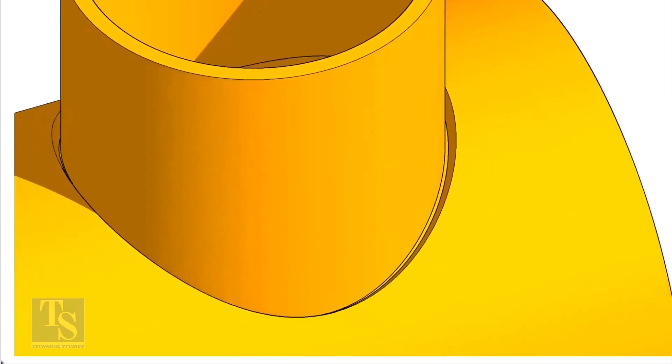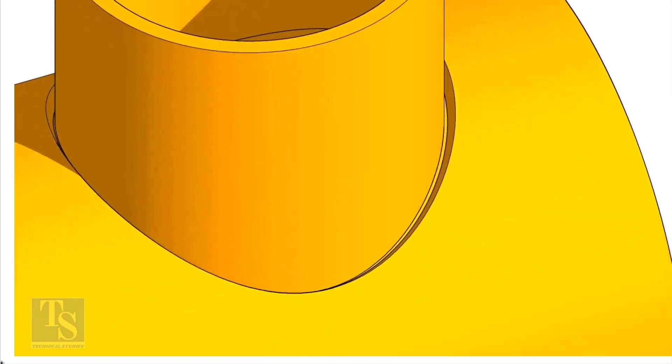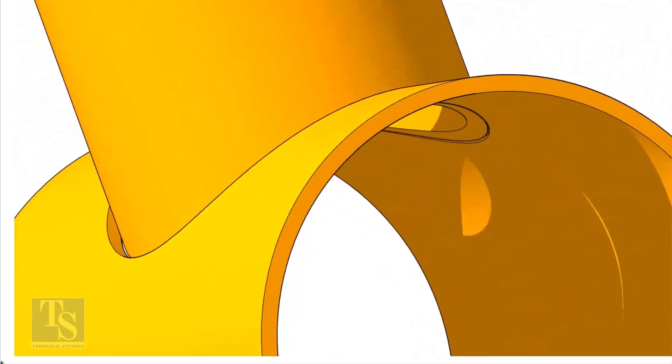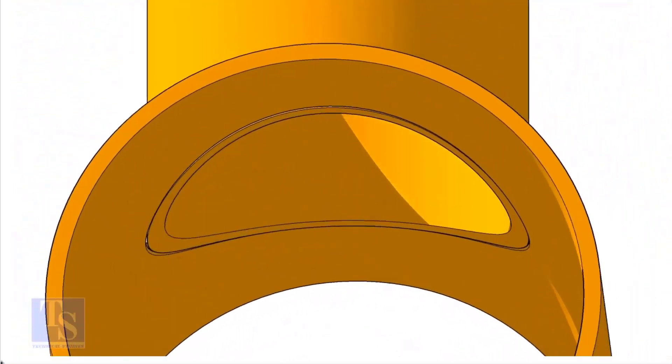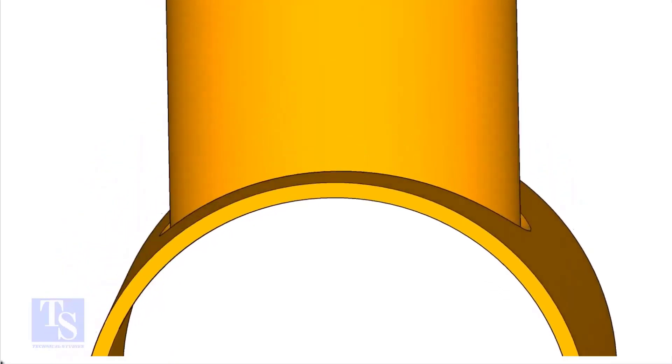On the branch pipe, there is no bevel preparation, but the cut-back cut is done. The end of the branch is level with the inside diameter of the header pipe.